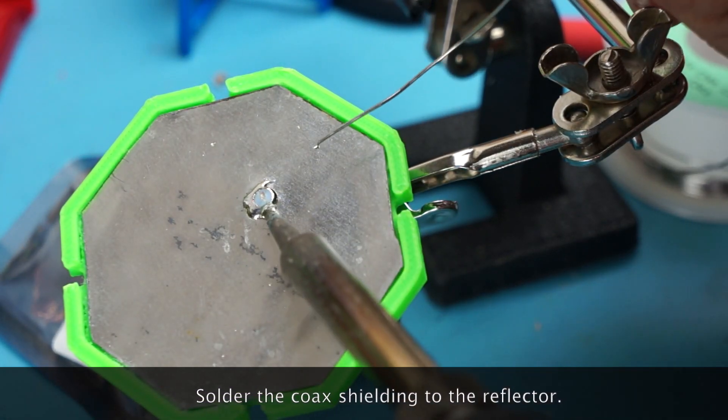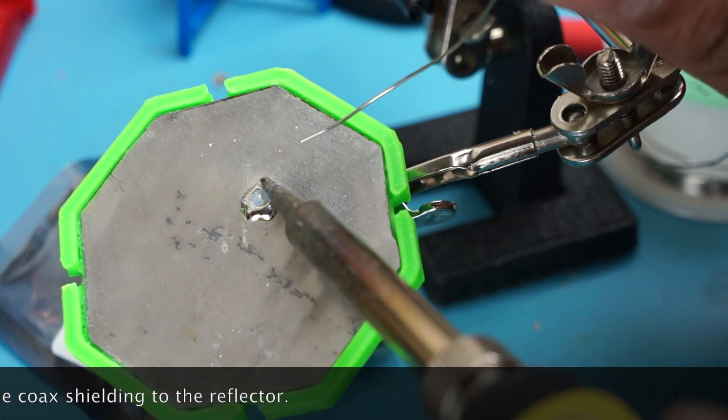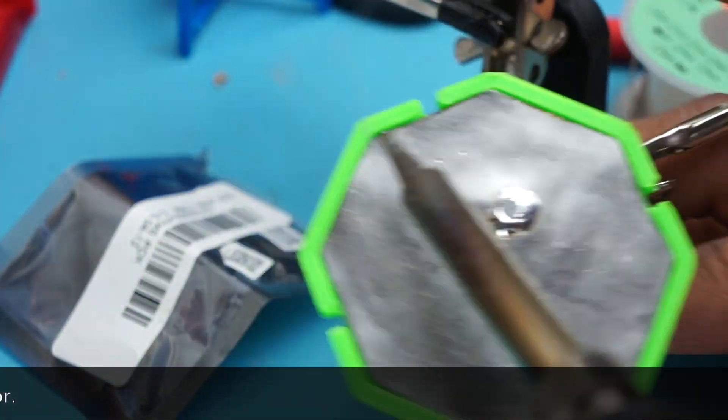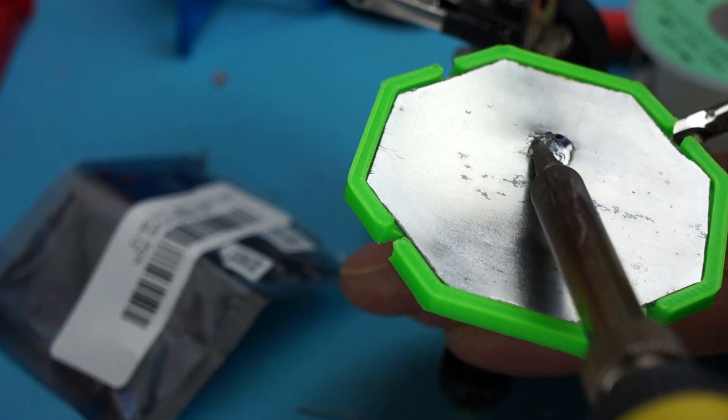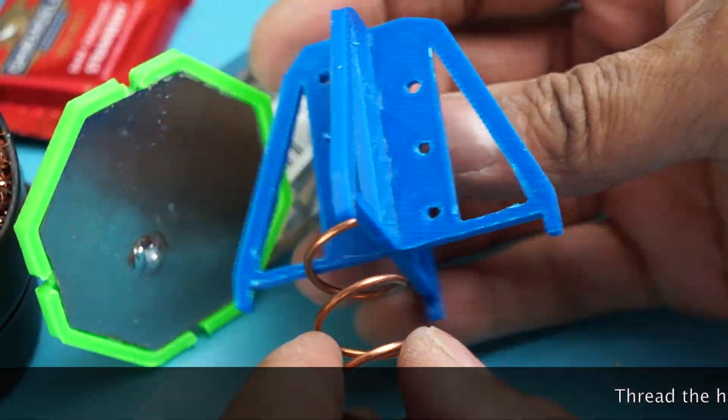Here I am soldering the shielding for the coax onto the reflector plate. Just take your time doing this and that will be connected then you'll be left with just the inner core of the wire pointing up.